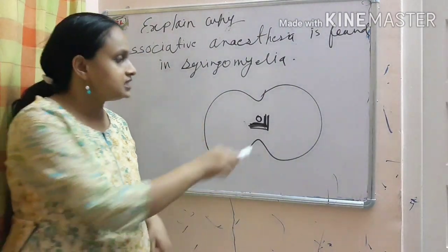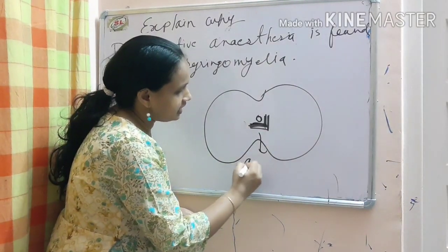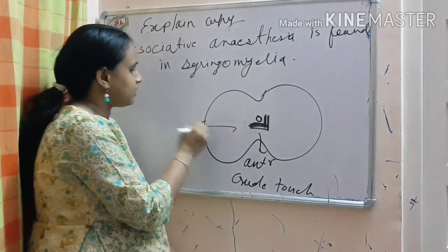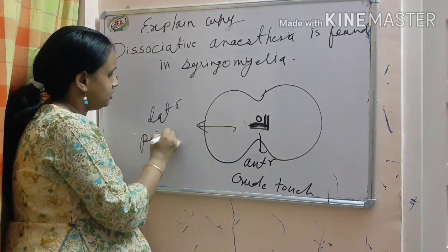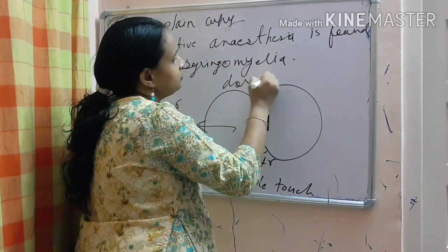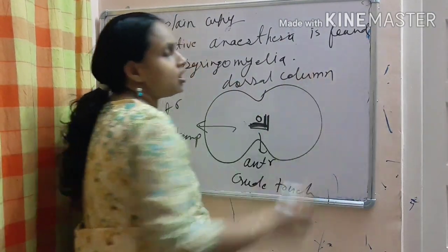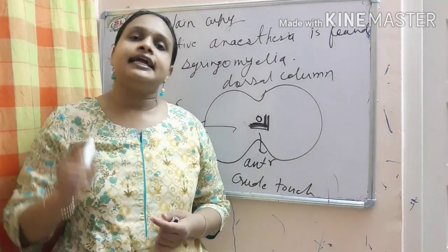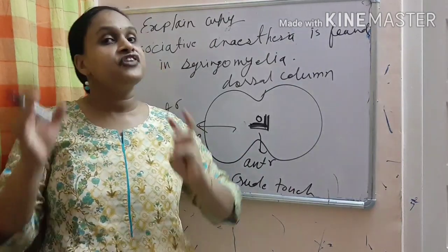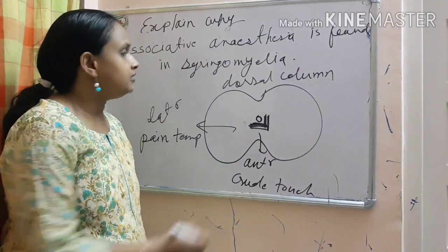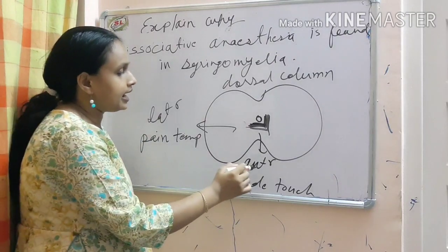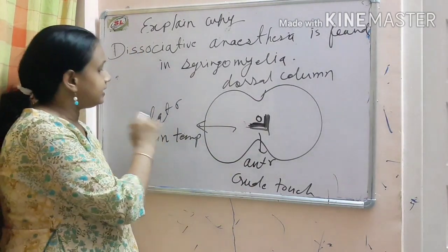And in spinal cord, I have already told you, there are three pathways. One is anterior spinothalamic tract which is taking crude touch. One is lateral spinothalamic tract which is taking pain and temperature. And one is dorsal column which is carrying all the sensation related to fine touch, that is tactile localization, tactile discrimination, rough anesthesia, stereognosis, all the finer aspect of the touch.